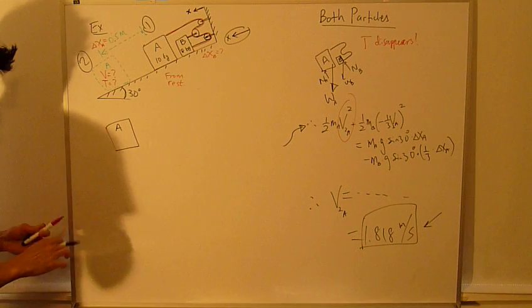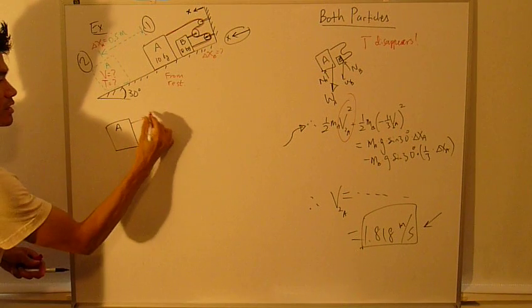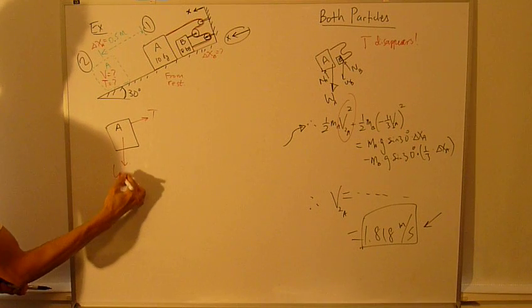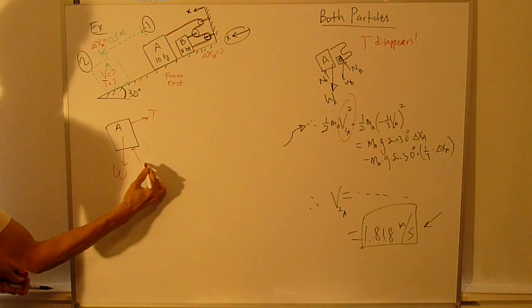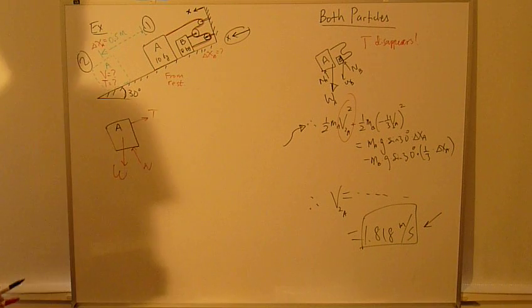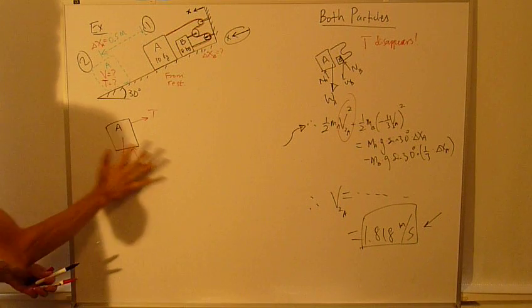In this A, T appears, and then you have weight, and then you have normal force. That's all. So this is your free body diagram.